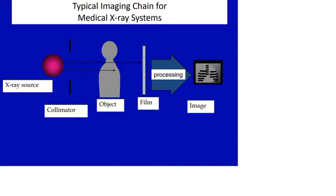An X-ray generator gives power to the X-ray tube and contains high voltage transformers, filament transformers, and rectifier circuits. The cathode is the negative terminal of the X-ray tube — it is a tungsten filament, and when current flows through it, the filament is heated and emits surface electrons by a process called thermionic emission. A very high voltage, in the range of thousands of volts or kilovolts, is applied between the cathode and anode, causing electrons to move toward the positive terminal at about half the velocity of light.